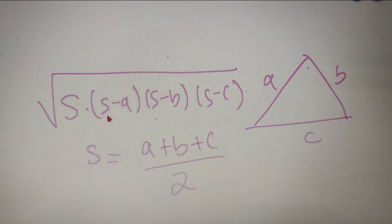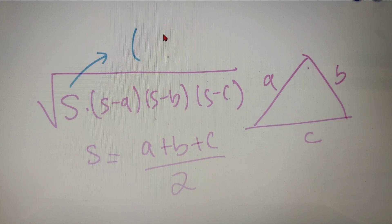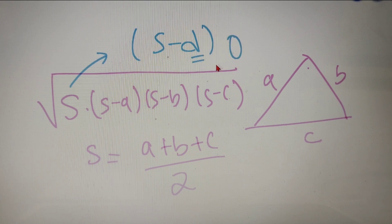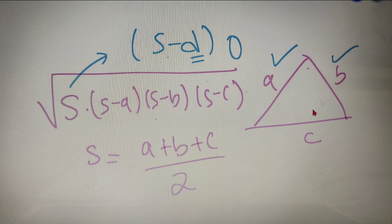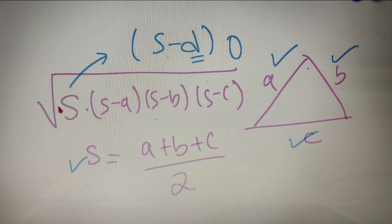Heron's formula is quite similar to Brahmagupta's formula; the only difference is that instead of S we have (S − D) in Brahmagupta's formula. So what we can do is put D as 0 in Brahmagupta's formula. Our fourth side becomes 0, giving us a triangle with sides A, B, and C, the semi-perimeter becomes (A + B + C) / 2, and Brahmagupta's formula transforms into Heron's formula.